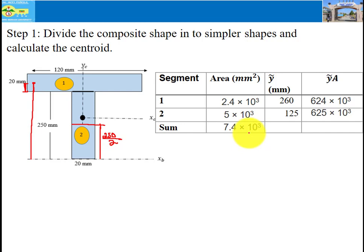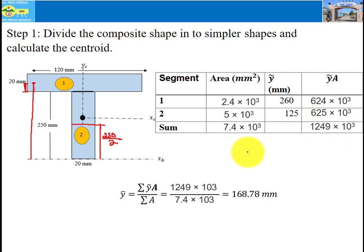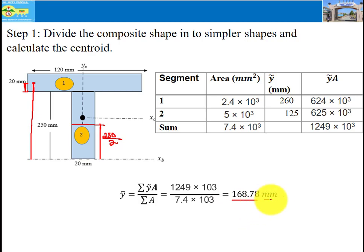The summation of area equals 7.4 times 10 to the power of 3, and the summation of y-tilde times area equals 1249 times 10 to the power of 3. Therefore y-bar equals the summation of y-tilde times area divided by the summation of area, which gives y-bar equal to 168.78 mm.